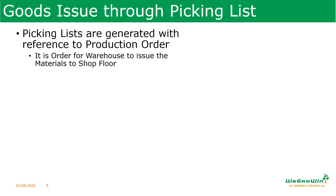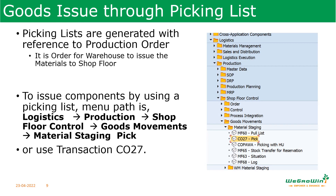There is another method called the picking list. Picking lists are generated with reference to each production order — it is the order given to the stores team or warehouse team to issue the material to the shop floor. When the warehouse module is not implemented, this picking list method is very useful. The transaction is CO27.